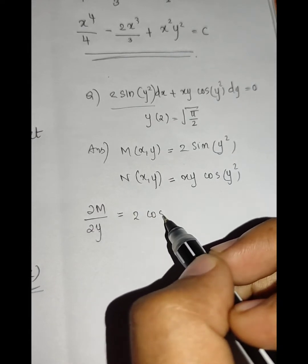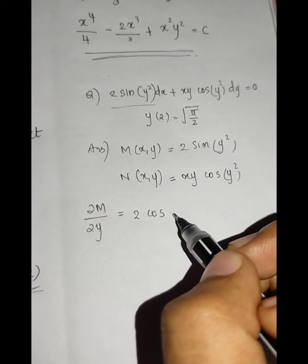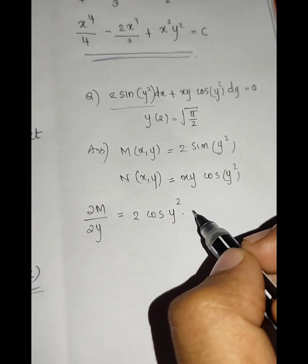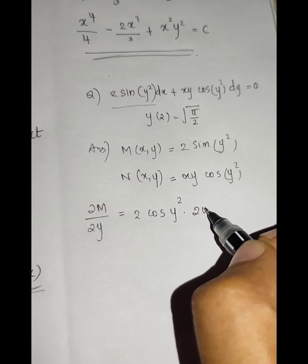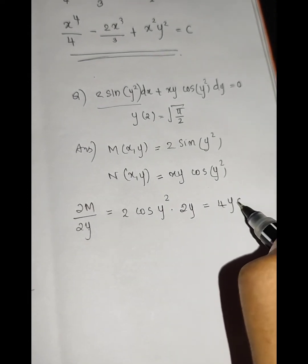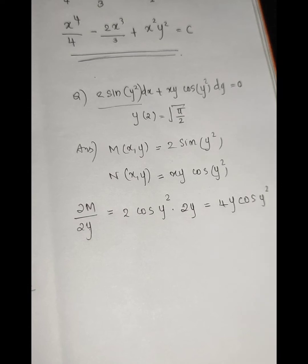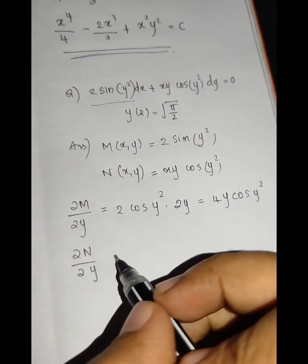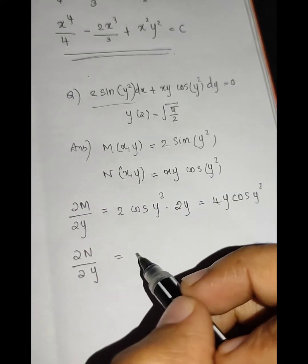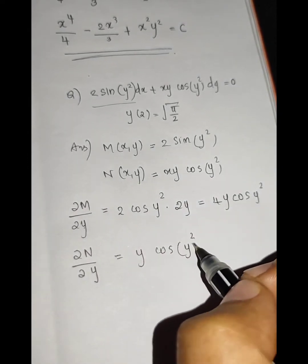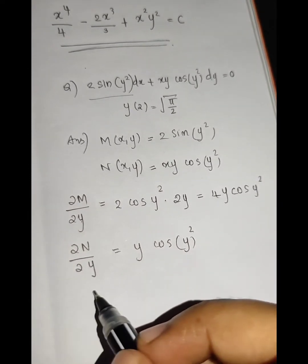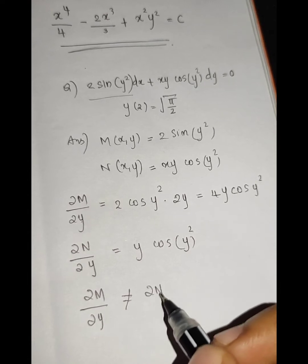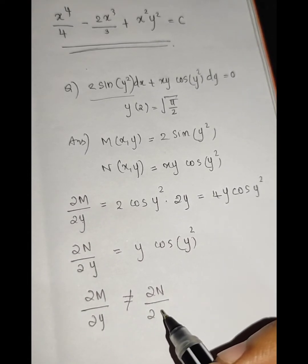N(x,y) is xy cos(y²). We find ∂M/∂y: the derivative gives 2 cos(y²) times the derivative of y², which is 2y, giving 4y cos(y²). Then ∂N/∂x is y cos(y²). Since ∂M/∂y is not equal to ∂N/∂x, it is not exact.